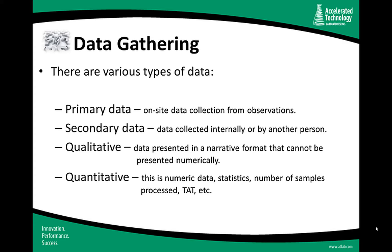There's qualitative data, which is more subjective — observations that the subject matter expert makes as they go through the laboratory, leading to specific conclusions without necessarily having actual numbers. Then there's quantitative data, which is what all scientists love: numbers that can be analyzed, graphed, and have statistics run on them. This includes turnaround time, the volume of samples going through a laboratory, the number of analysts, the number of instruments, and the number of tests that can be done on each instrument — looking at analyst capacity, instrument capacity, and workloads.